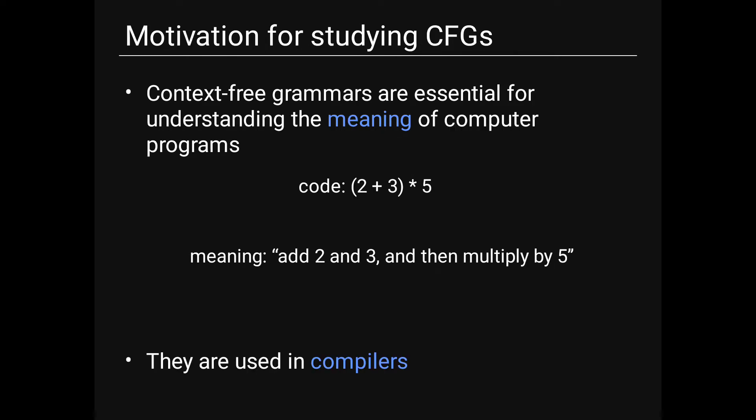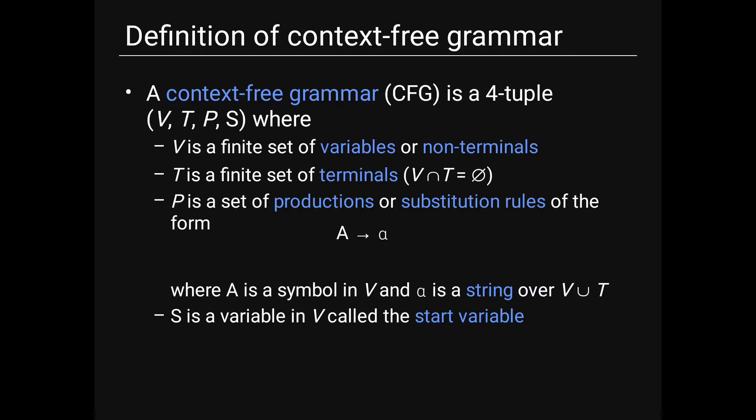The motivation for studying context-free grammars is that they are essential for understanding the meaning of computer programs. For example, 2+3×5 means: add 2 and 3, then multiply by 5. CFGs are used in compilers.